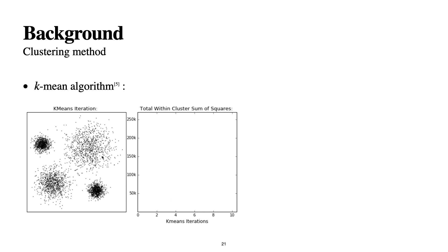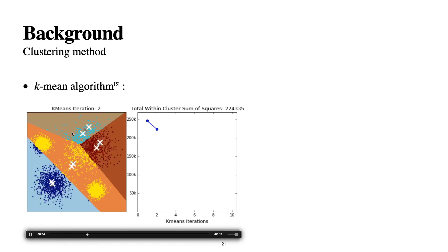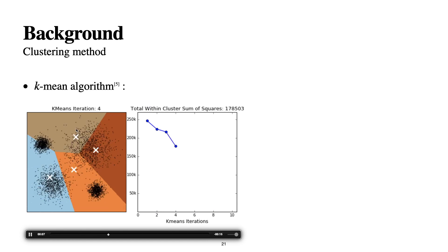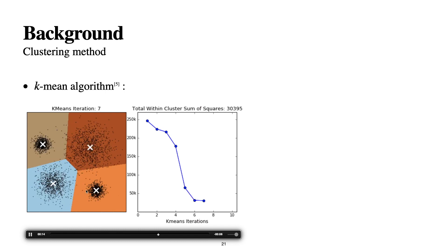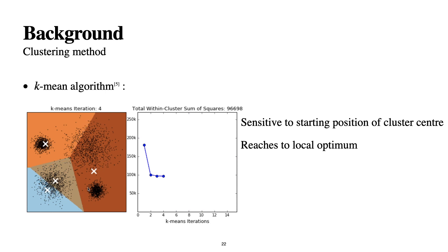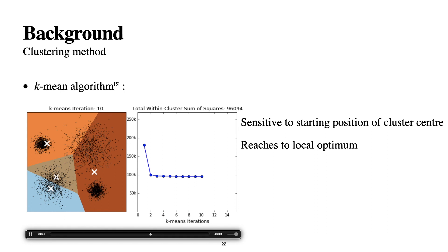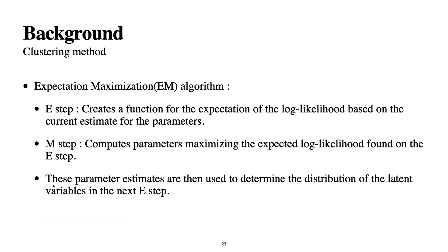In K-means clustering — which is the hard assignment approach — we assign each point to a cluster and keep taking the mean until it converges to a global minimum. However, K-means has a problem: it is very sensitive to the initial guess and may converge to a local optimum. Here you can see that when our initial guess was wrong, we get incorrect results — it is very sensitive to initialization.